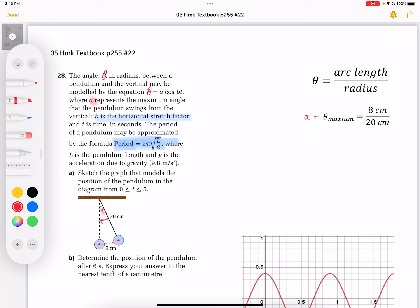is going to be represented by this particular orientation, which gives us an arc length of 8 centimeters and a radius or the pendulum length of 20 centimeters.